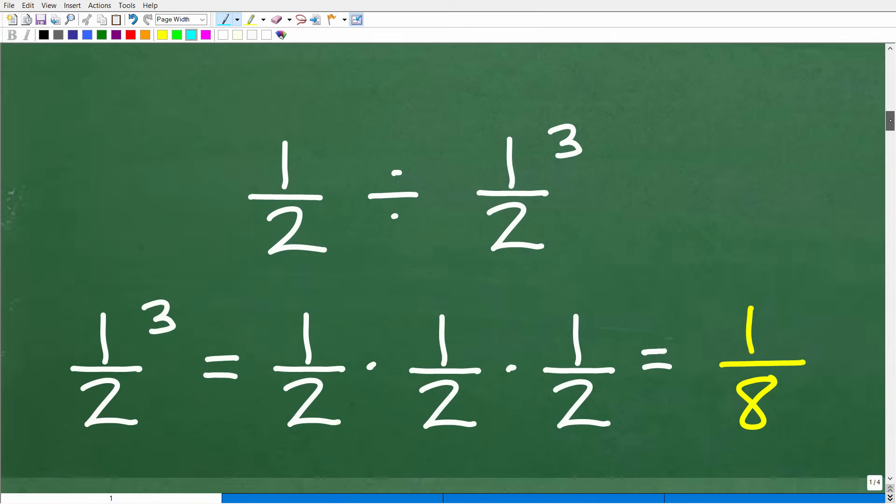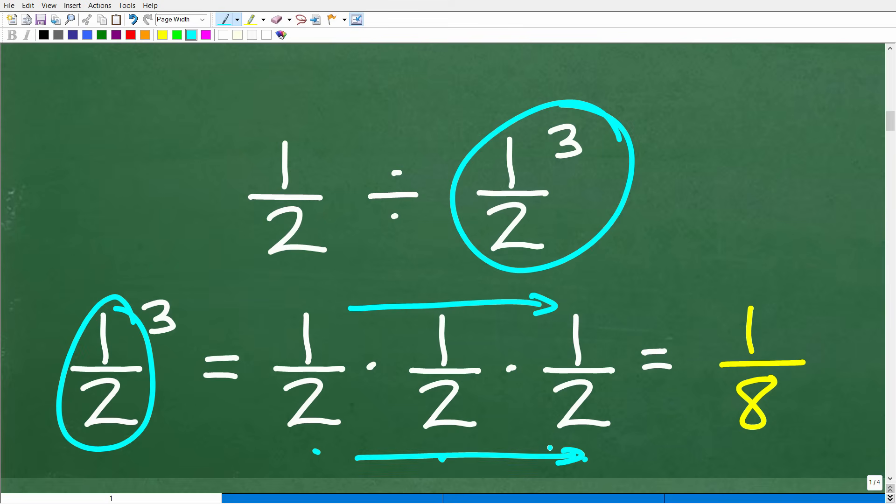Okay, so 1 half divided by 1 half cubed. I get to figure out what 1 half cubed means. And what does that mean? Well, it means 1 half cubed means take 1 half and multiply it by itself 3 times 1, 2, 3. And, of course, we're multiplying fractions. So, when we multiply fractions,